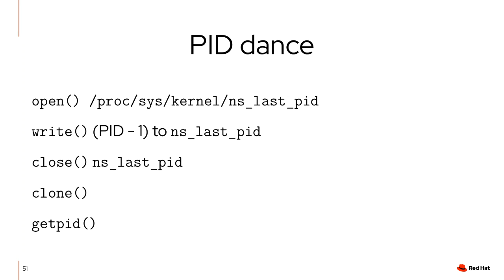An interesting aspect of how CRIU does this is what I call the 'PID dance'. To restore a process with the same PID, CRIU used to: open /proc/sys/kernel/ns_last_pid, write the desired PID minus one to ns_last_pid, close ns_last_pid, quickly do a clone, then do a getpid to verify it's the same PID. If another process was created during that time, CRIU fails at this point. This can lead to race conditions and requires multiple system calls — it's slow.